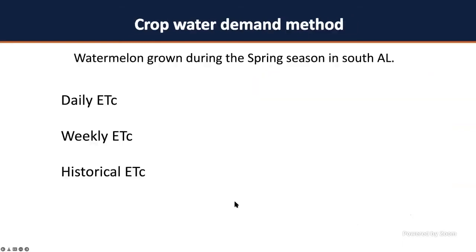Once you understand that, you can calculate how much water per day, per week, or historically your crop needs, and schedule irrigation events to replace what was lost. For daily ETC, use the ETO from the day before to calculate how much to apply today. For weekly, calculate from last week and apply in the following week. For historical, you know how much water was lost historically on a given date and assume that's what's being lost today.